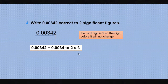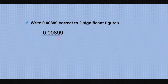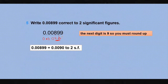Write 0.00899 correct to two significant figures. This number has three significant figures. To write to two, look at the third significant digit, which is 9. We round up — 9 plus 1 is 10, carry 1; 9 plus 1 is 10, carry 1; 8 plus 1 is 9. The answer is 0.0090. The trailing zero is significant here because there is a decimal point.